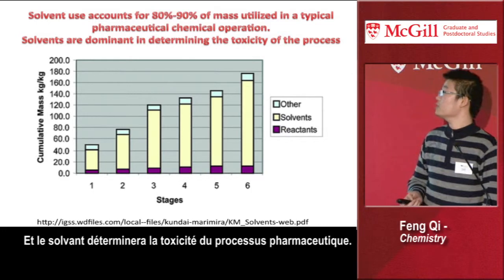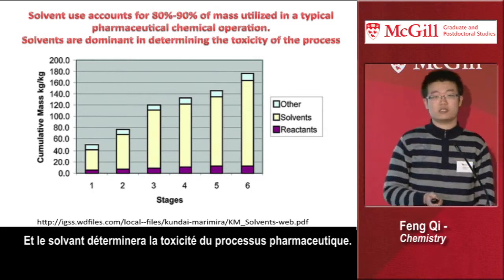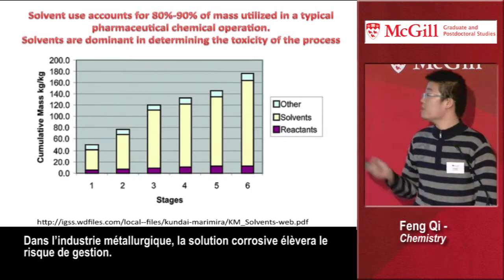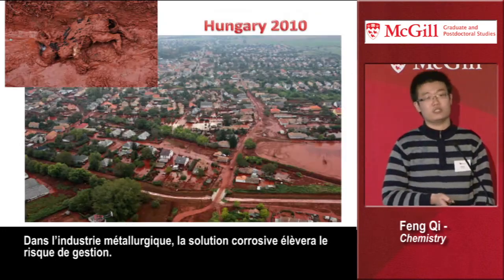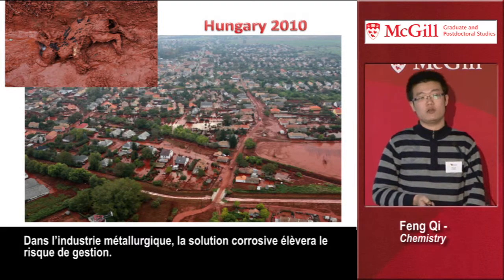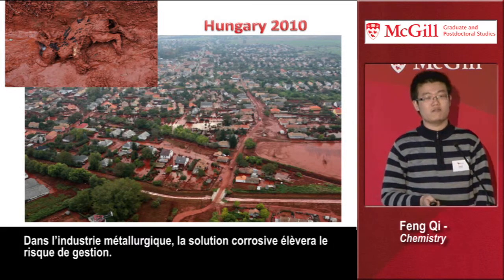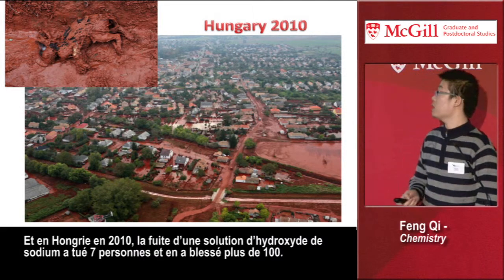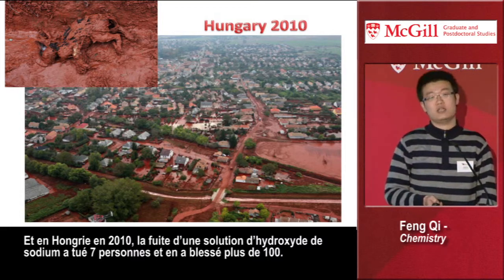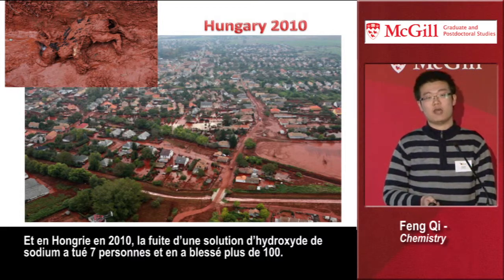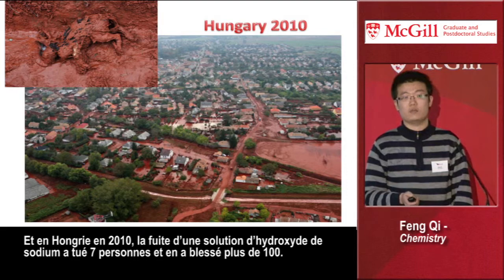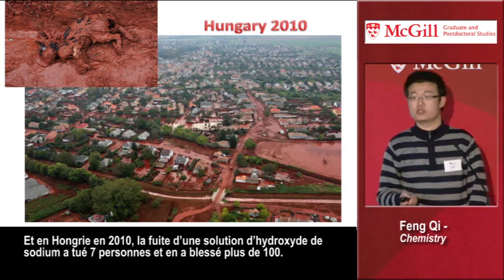The solvent will determine the toxicity of a pharmaceutical process. In the metallurgical industry, corrosive solutions increase the risk of management. And in Hungary in 2010, the leaking of a sodium hydroxide solution killed seven people and more than 100 people were injured.